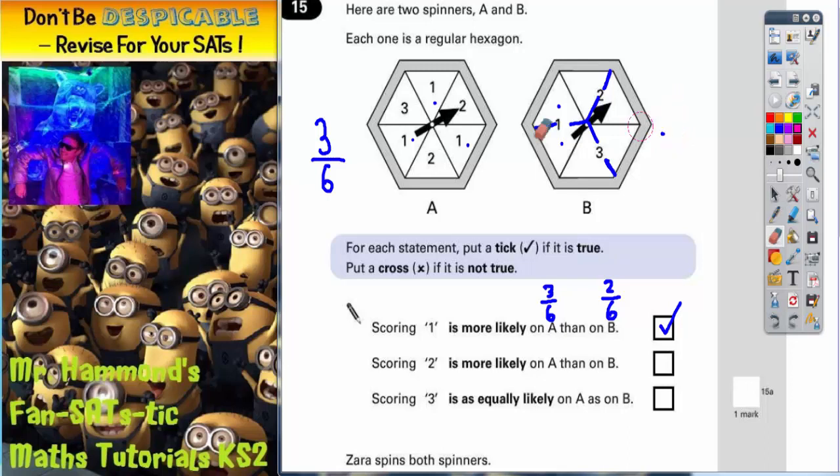Second statement. Let's get a different colour. Second statement says this. Scoring a two is more likely on A than on B.